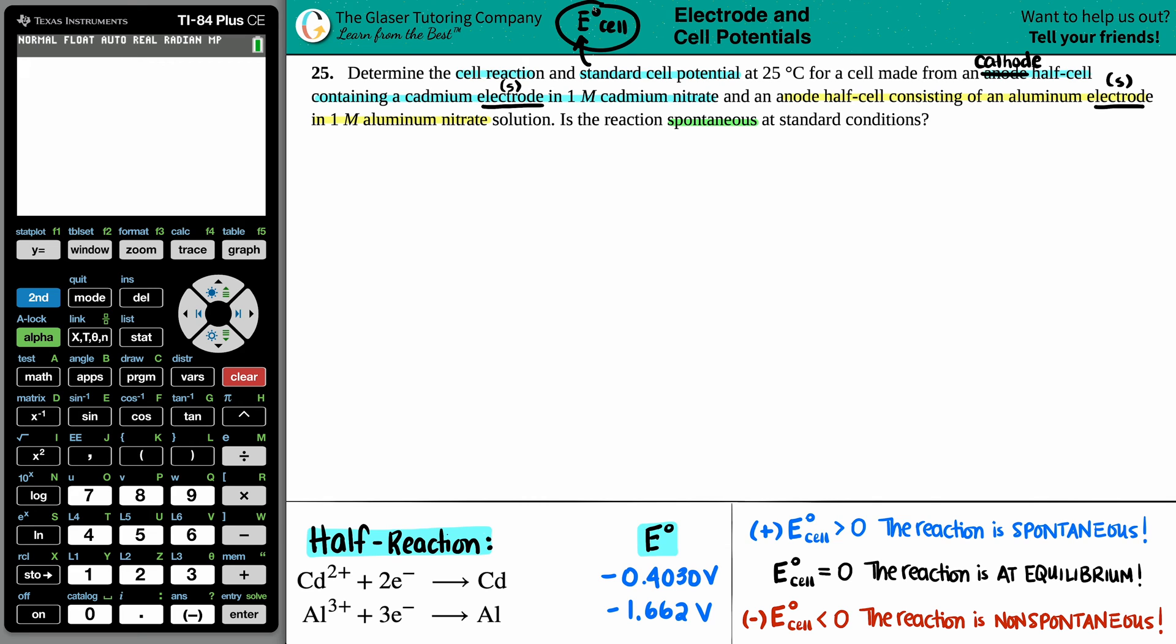If we want to solve for a standard cell potential, it's a really easy formula to find out. It's just the cell potential, E°cell, is equal to the cell potential of the cathode minus the cell potential of the anode. You could always just think of it as cathode minus anode.